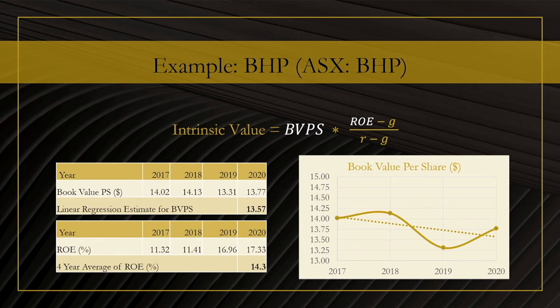Now let's look at examples. Firstly, we'll be looking at the mining company BHP. We start by deciding what the book value per share should be, looking at data from the last four years. We can see those numbers in the table to the left, and on the right we also plotted this as a function of time. We see that the book value is downtrending, however there are still fluctuations up and down. To be on the safe side, we use linear regression to get the value for 2020 — simply plotting the best straight-line fit and reading off the value at 2020. We see the line reaches about 13.50.